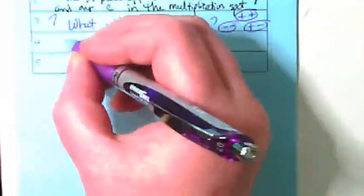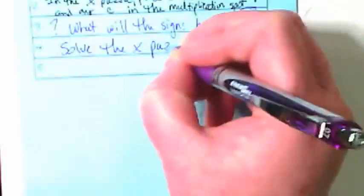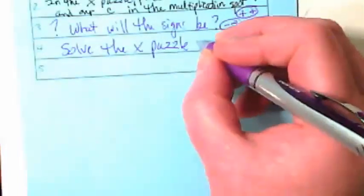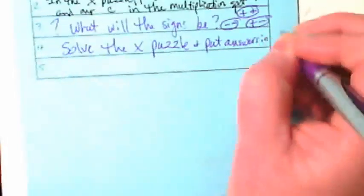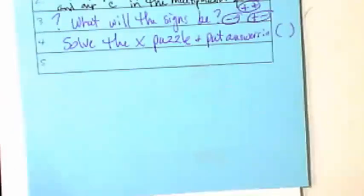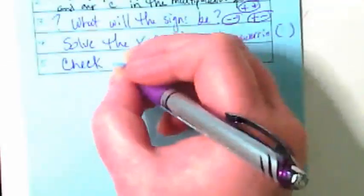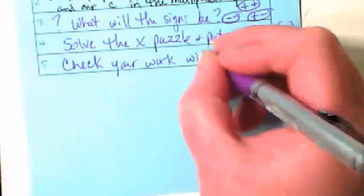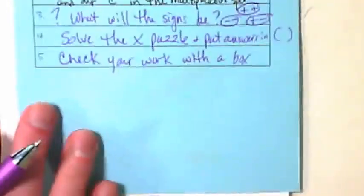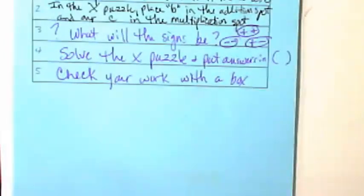Number four. We're going to solve the x puzzle and put the answers in the parentheses. And then finally, we're going to check our work with the box. Okay, I don't want to go on with the example until we're caught up. Are we ready? Okay.